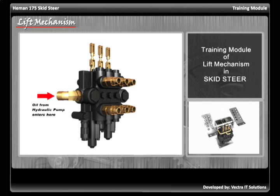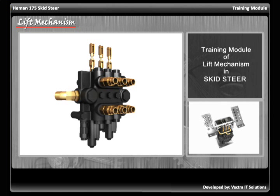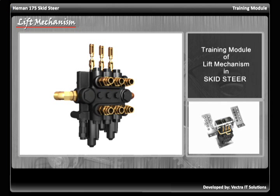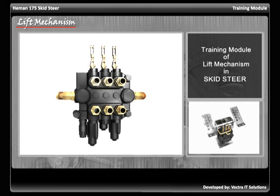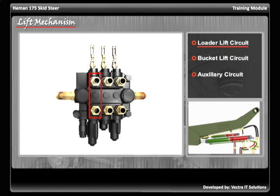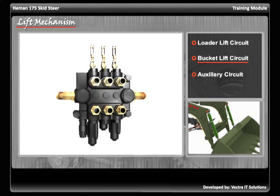Pressurized oil from the hydraulic pump enters into the valve block from this port and is further pushed to any of the seven ports according to the choice made by the operator. The highlighted pair of ports sends and receives oil to and from the two cylinders of the loader arm. This pair of ports sends and receives oil to and from the two cylinders of the bucket.